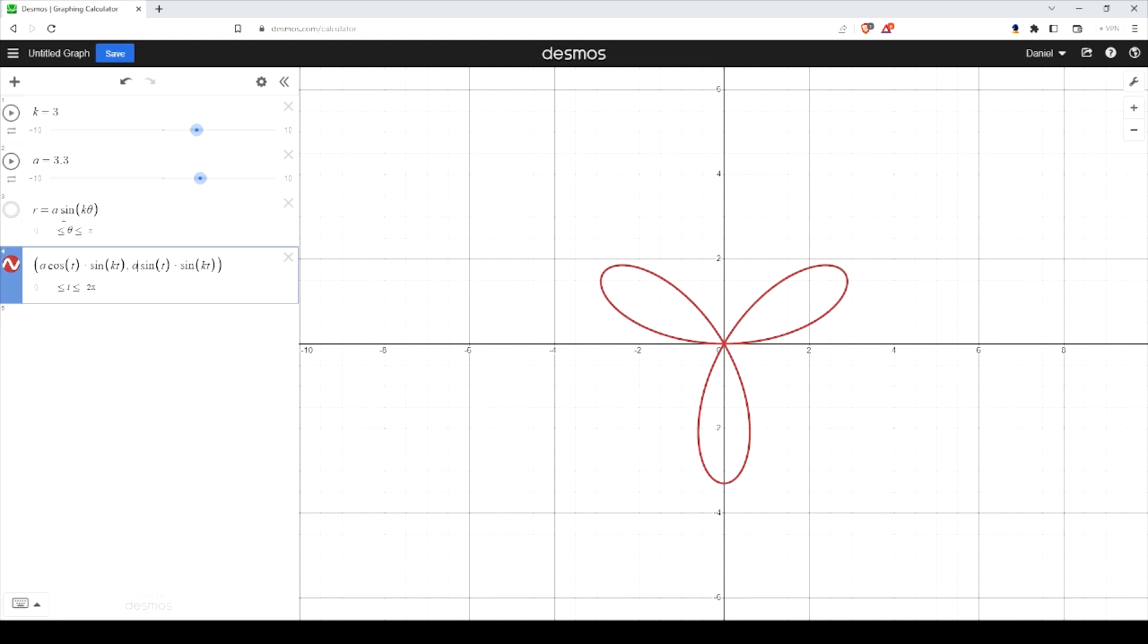Now what this has done is it has made it easier for us to translate this. So now, let's say if I want to move it 6 to the left, we'll just simply subtract 6.